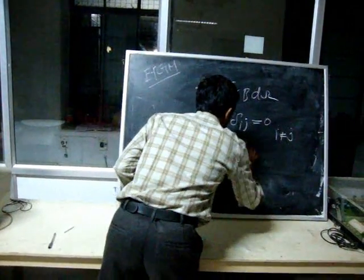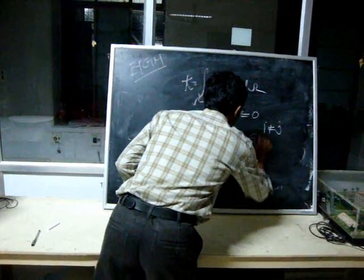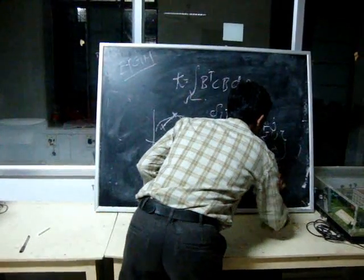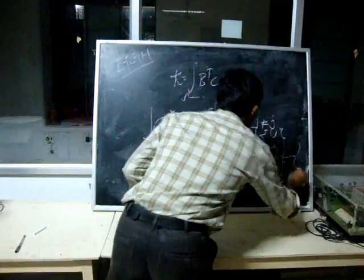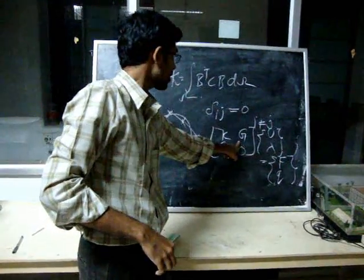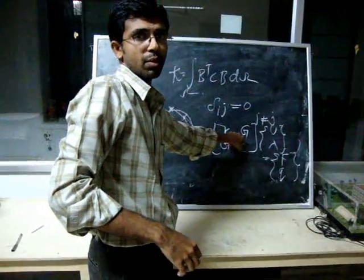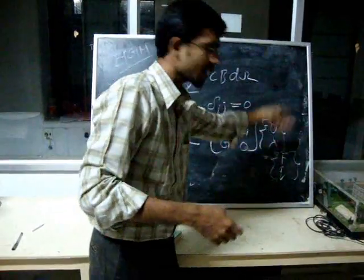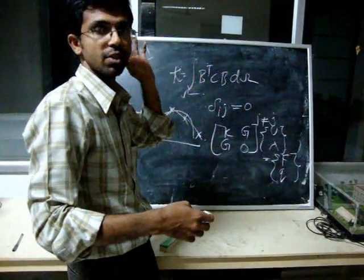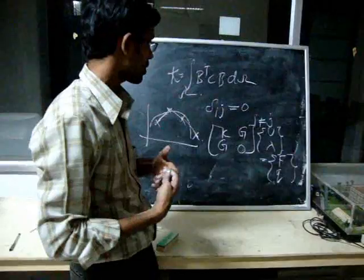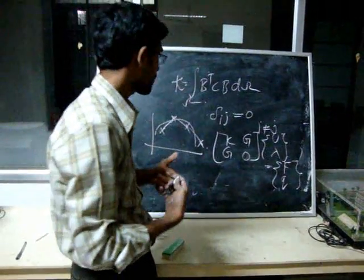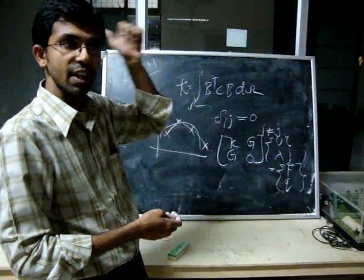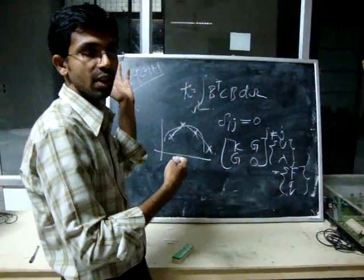The final set of algebraic equations takes the form [K, G; G^T, 0]{U; λ} = {F; Q} because of the Lagrange multipliers. G is the integral performed over the displacement boundary of the product of Moving Least Squares shape functions and the Lagrange multiplier shape functions (first-order Lagrange interpolants). For a 2D problem the displacement boundary is 1D, so I use 1−x/L and x/L shape functions as in finite element methods.